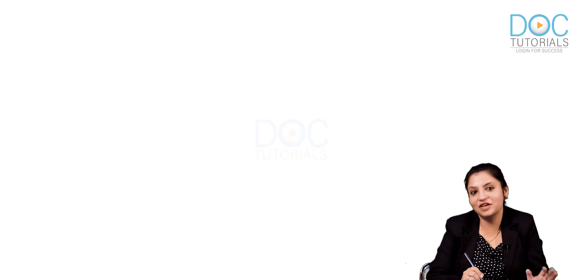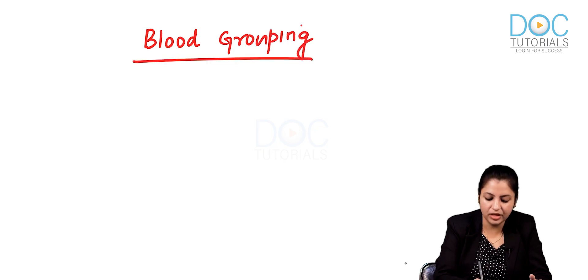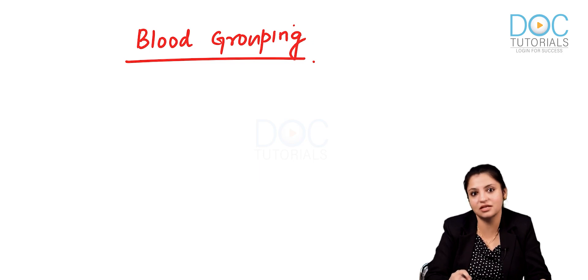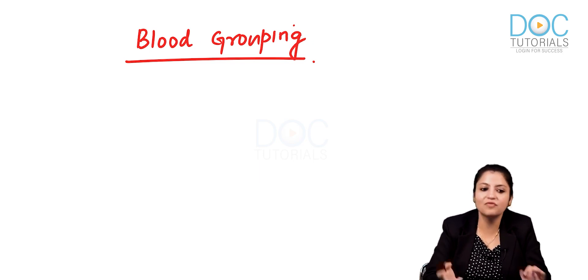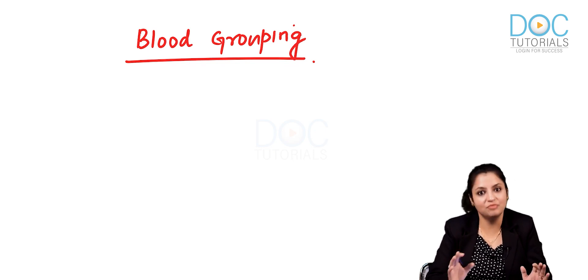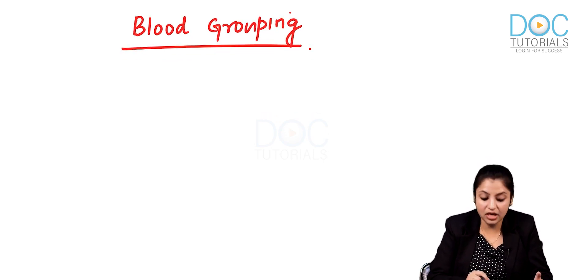Hello everyone. Today we're going to study blood banking, and we're going to start with the very important topic of blood grouping. Blood grouping is a very important concept that should be crystal clear in your mind, because only then will you be able to understand why we do ABO typing in some blood components and RH typing in some but not others.